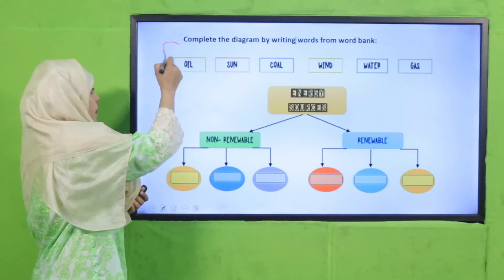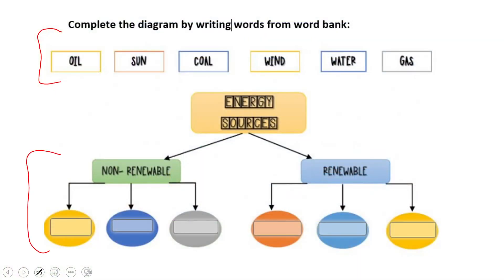Now complete the diagram by writing the words from the word bank. Aapko batana hai ki inme se kaun se non-renewable resources hain aur kaun se renewable resources hain. Oil is non-renewable because once it is burnt you cannot generate it again. Sun is renewable because you keep using it. Coal is non-renewable once used. Wind is renewable. Gas is non-renewable. Water, from an energy point of view, is also renewable.